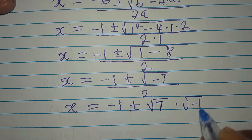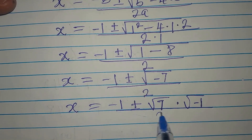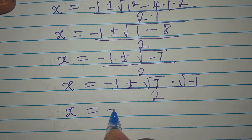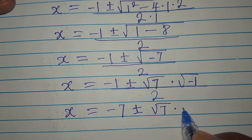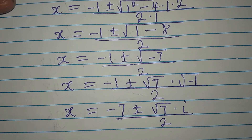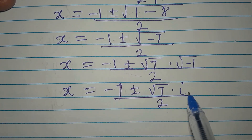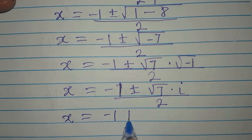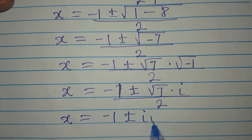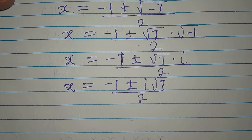Since we have a negative under the square root, we write square root of negative 7 as square root of 7 times square root of negative 1, which equals i times square root of 7. So x equals negative 1 plus or minus i root 7, all divided by 2. This is a two-in-one solution.